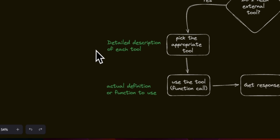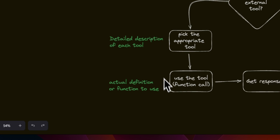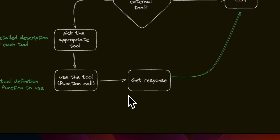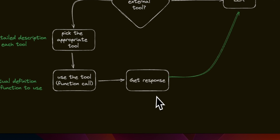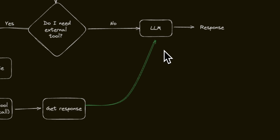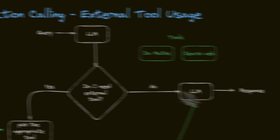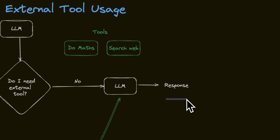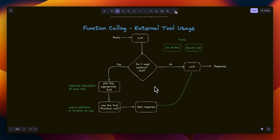First, it needs to determine which tool to use. And then it needs to make a call to that tool — so it could be a simple API or an external function that implements the tool usage. Then it will get a response from this function or API call that is going to be sent to the LLM as context, along with the query, and the LLM is going to generate a response. This is how the general function calling flow works.